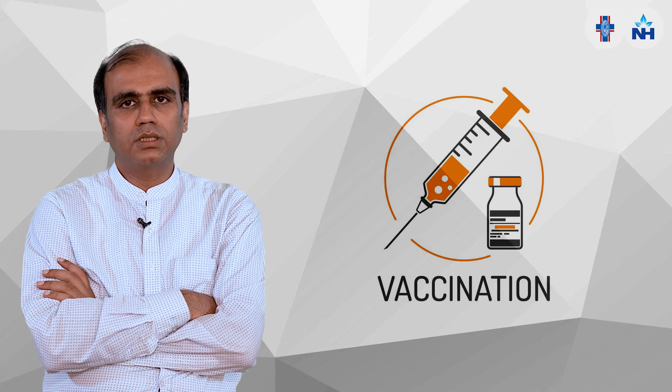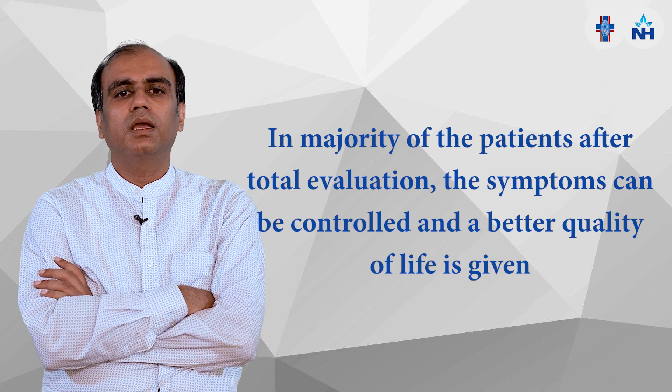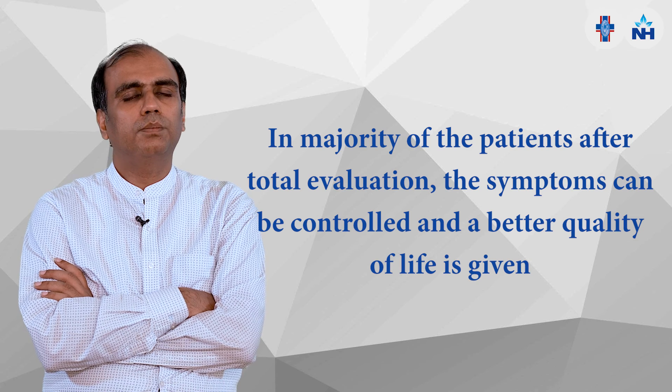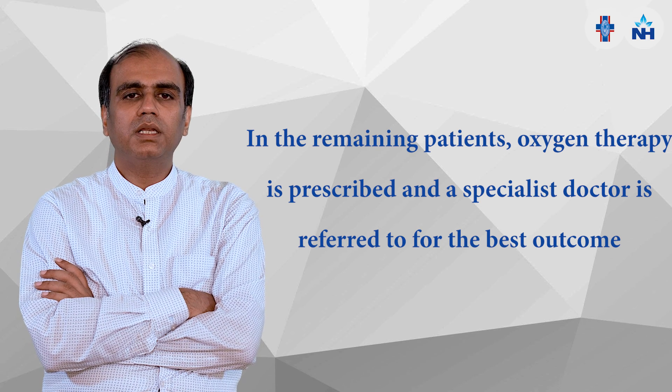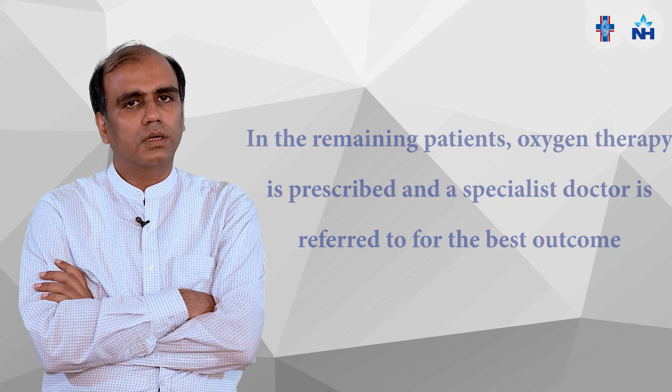If the patient is going to improve with these medications, then we have to put the patient on pulmonary rehabilitation and vaccination. If the patient is not going to improve, then we have to offer oxygen therapy and positive airway therapy. Basically, it is a systemic disease — we have to evaluate the patient in totality. In the majority of patients, we can control the symptoms and improve quality of life. In the remaining cases, we have to offer oxygen therapy and always refer to a specialist doctor for the final outcome. Thank you.